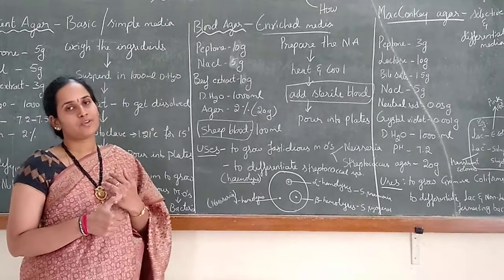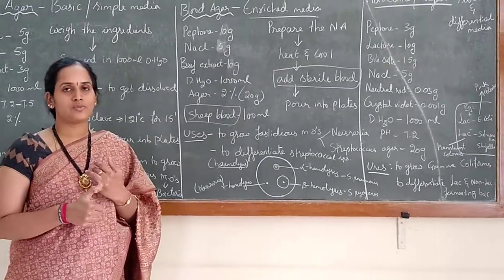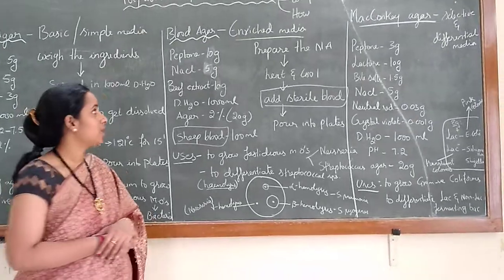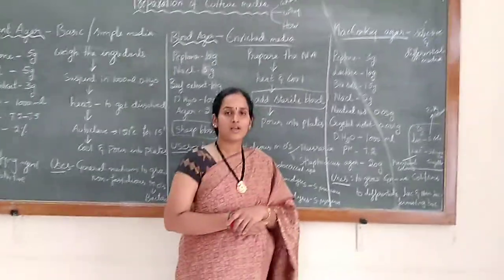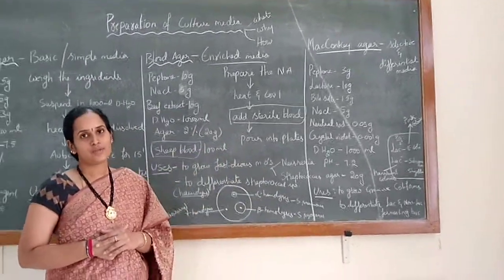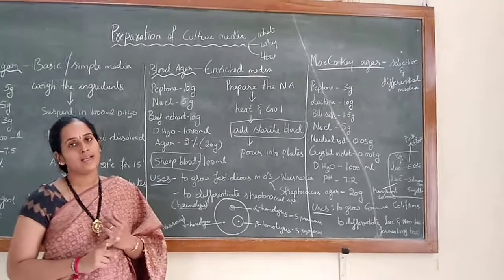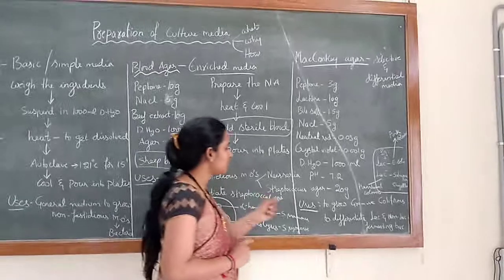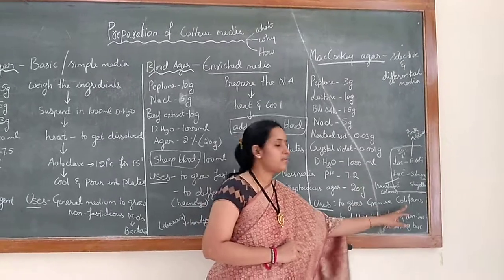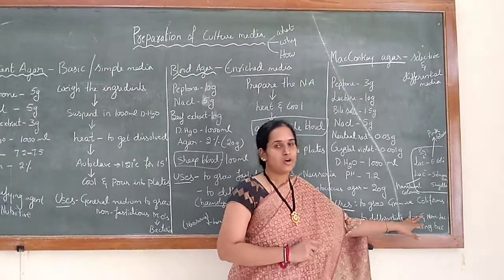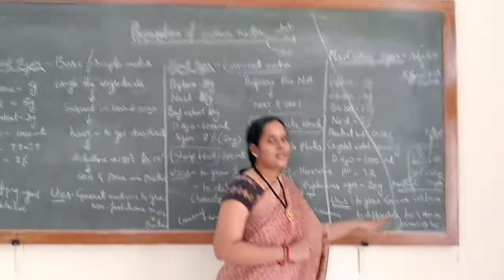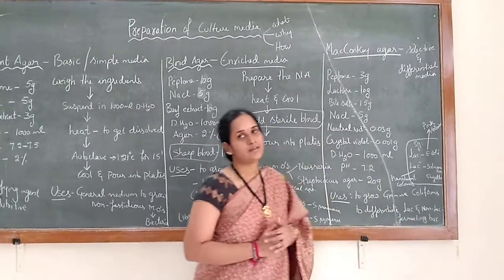We can grow specific pathogens like Neisseria and Streptococcus species and differentiate within Streptococcus species using blood agar. Now coming to MacConkey agar — it comes under selective as well as differential media. It is selective because it is exclusively used to grow gram-negative rods, and it is differential because by using this media we can differentiate lactose and non-lactose fermenting bacteria.